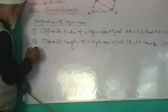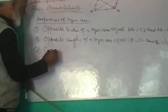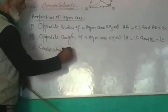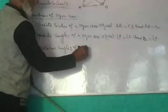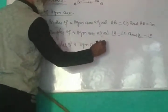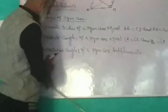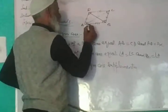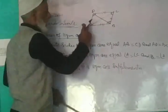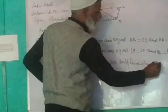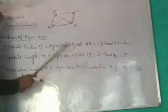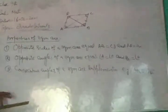Property number 3: consecutive angles of a parallelogram are supplementary. What is meant by supplementary? Two angles are said to be supplementary if their sum is equal to 180 degrees. For example, angle A plus angle B is equal to 180 degrees. The consecutive angle pairs are B to C, C to D, and D to A — each pair sums to 180 degrees.